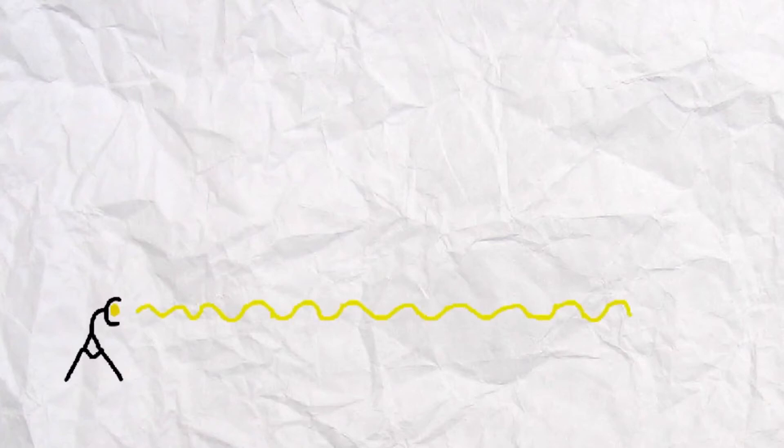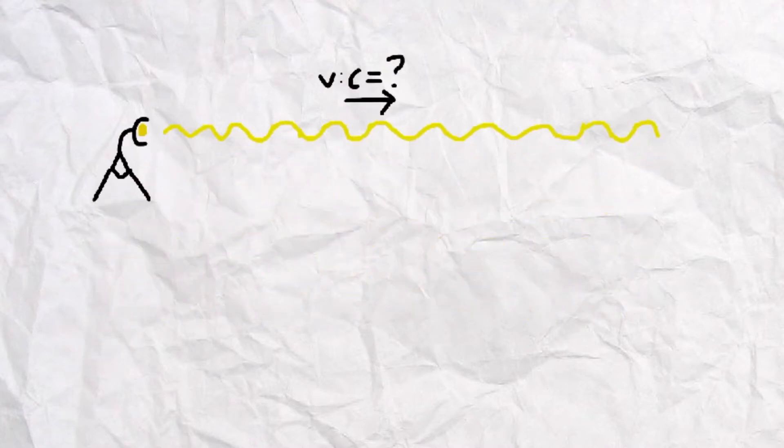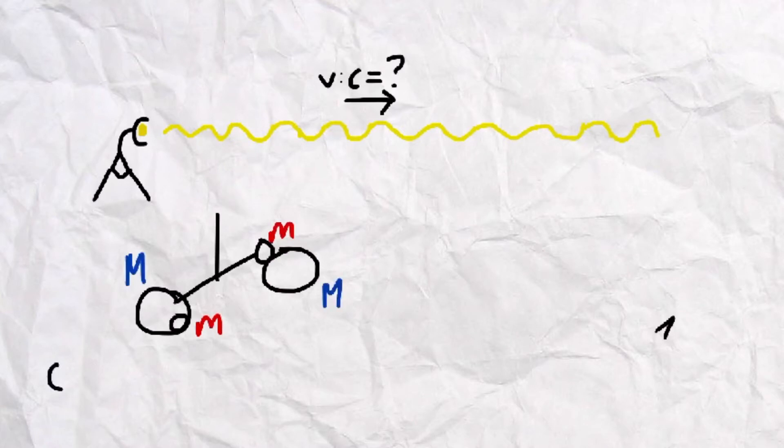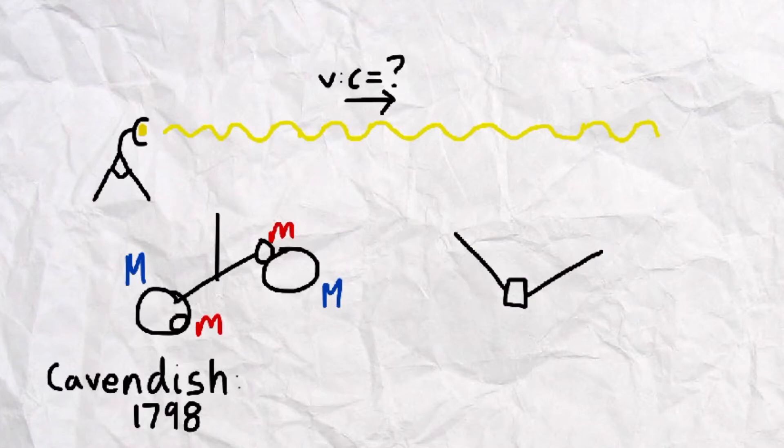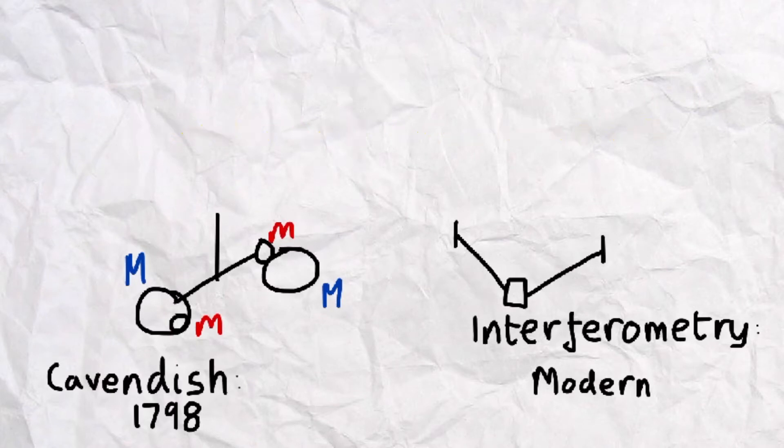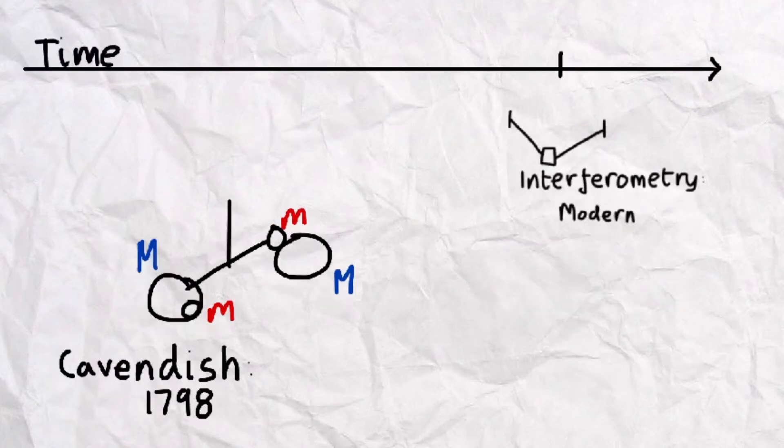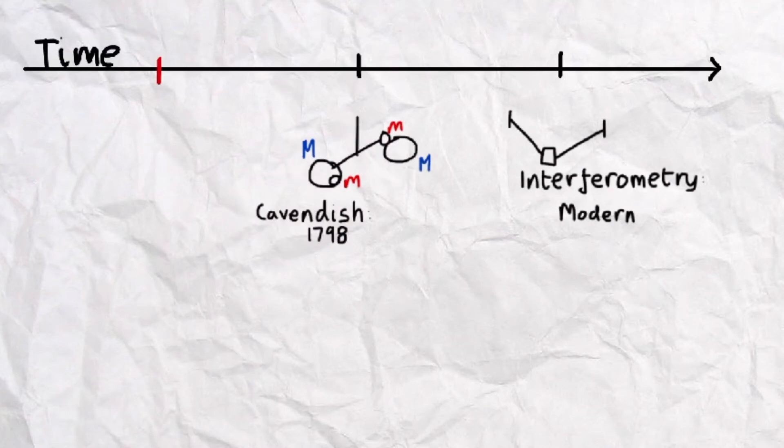The determination of the speed of light has been a great milestone in the history of scientific knowledge. In modern science, there have been numerous ways and practical experiments done to calculate the value of c, from Cavendish's experiment towards the end of the 19th century to large-scale interferometry in modern days. But who was first? Who was the first person to discover the speed of light and how did he do it?